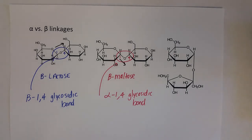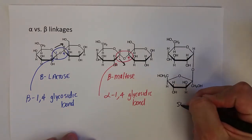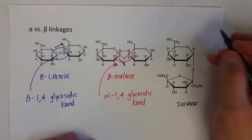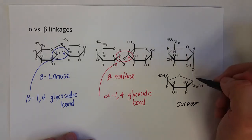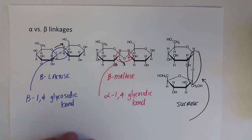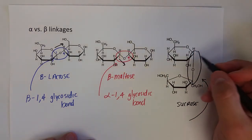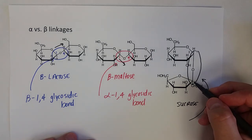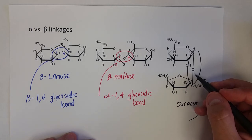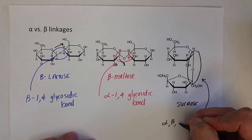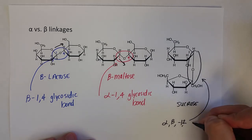For sucrose, this bond is actually between two anomeric carbons, so we need to name both configurations. The hydroxyl group on the glucose was in the down position — that is an alpha carbon. The hydroxyl group on the anomeric fructose was in the up position — that is beta fructose. So this is an alpha-beta-1,2 glycosidic bond.